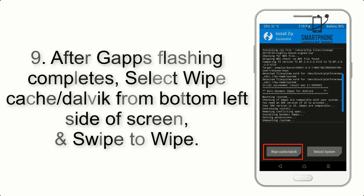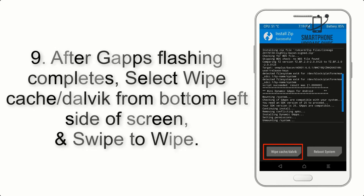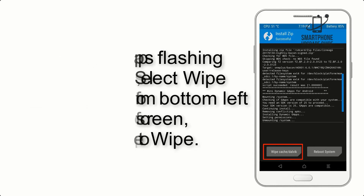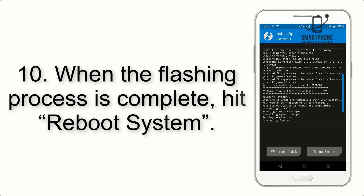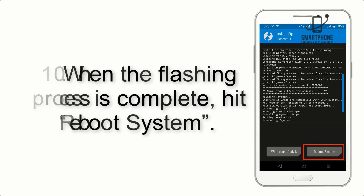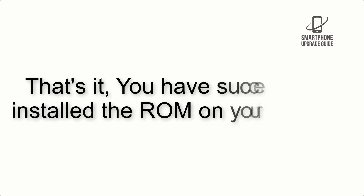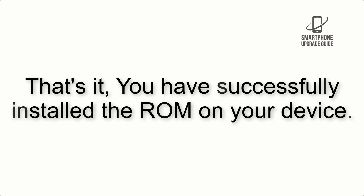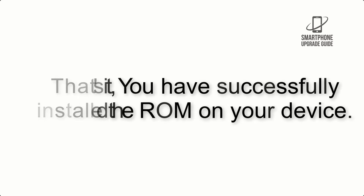Step 8: Flash the GApps zip package in the same manner. Step 9: After GApps flashing completes, select Wipe Cache and Dalvik from the bottom left side of the screen and swipe to wipe. Step 10: When the flashing process is complete, hit Reboot System. That's it — you have successfully installed the ROM on your device.